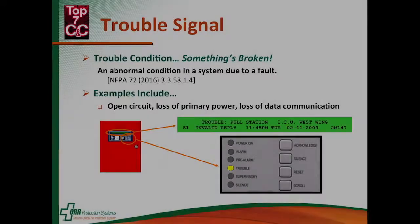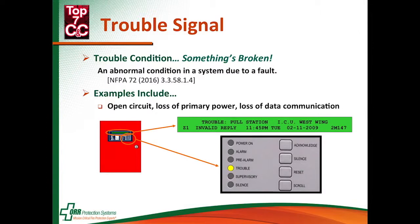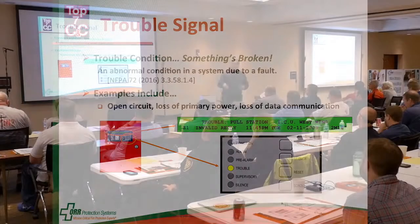Another signal is the trouble signal or trouble condition. It means that something in the fire alarm system is broken. So it could be an open circuit where a wire is broken — we don't have a continuous electrical pathway back to the panel.